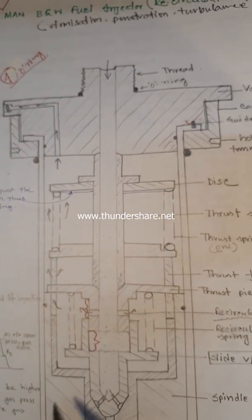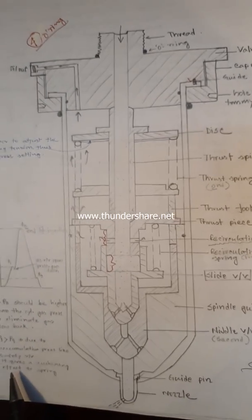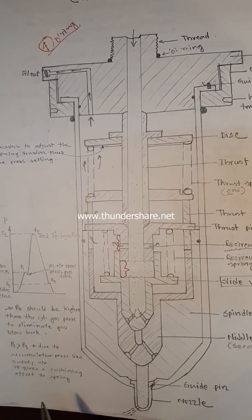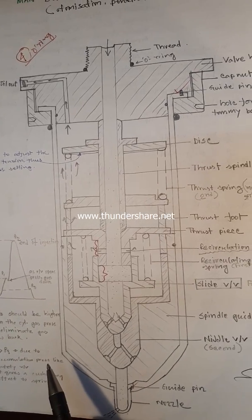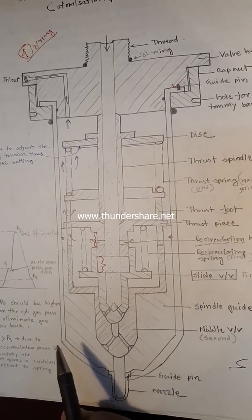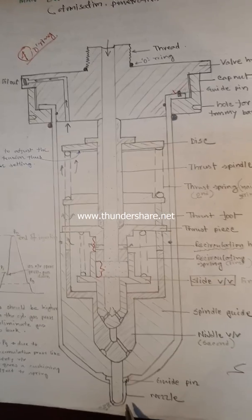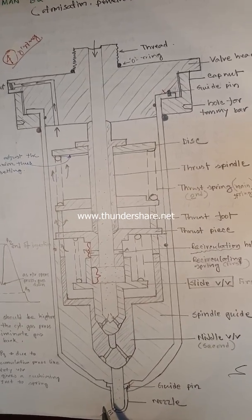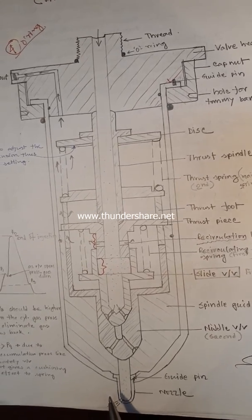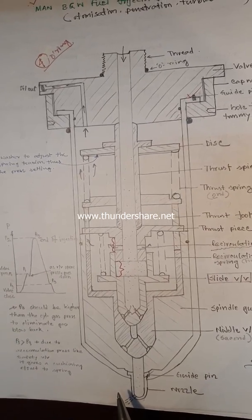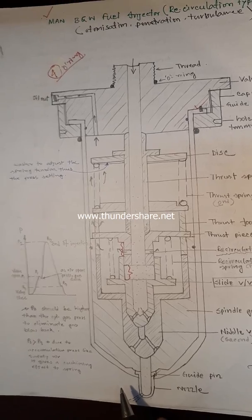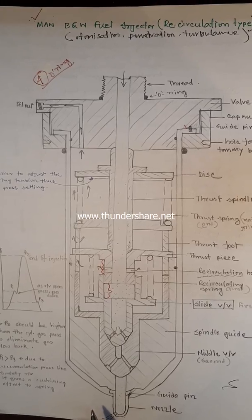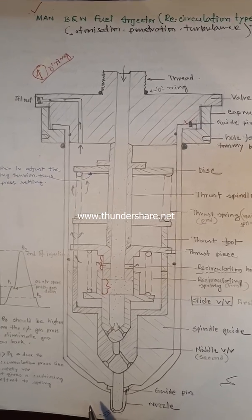When closing, there is some accumulation pressure — like a safety valve — which gives a cushioning effect to the spring. The fuel injector nozzle has small orifices that vary from engine to engine: 4 to 10 orifices, with diameters ranging from 0.1 mm to 1 mm. 0.1 mm is for auxiliary engines and 1 mm is for main engines.